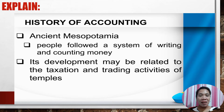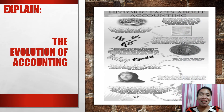Accounting started during ancient times in ancient Mesopotamia, where people followed a system of writing and counting money. Its development may be related to the taxation and trading activities of temples. Record keeping was already common from Mesopotamia, China, and India to Central and South America around 3600 BC. Evidence was found in clay tablets — the oldest evidence of record keeping in Mesopotamia — dealing with commercial transactions such as listing of accounts receivable and accounts payable.